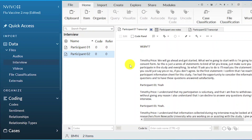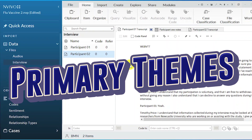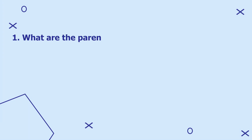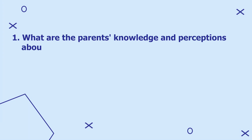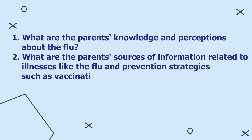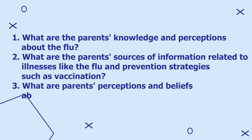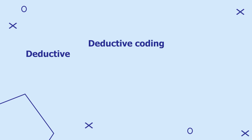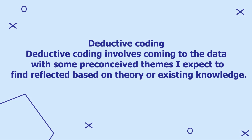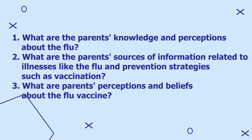Let's move to the next approach in conducting data analysis in NVivo, which is coming up with the primary themes. Here we have three main research questions the study ought to answer. The first was: what are the parents' knowledge and perceptions about the flu? The second: what are the parents' sources of information related to illnesses like the flu and prevention strategies such as vaccination? And number three: what are the parents' perceptions and beliefs about the flu vaccine? I'm using the deductive approach to coding, which involves coming to the data with some preconceived themes.